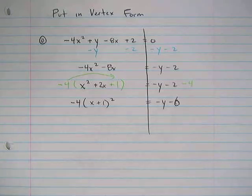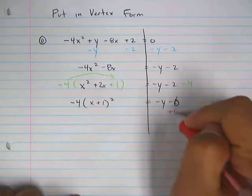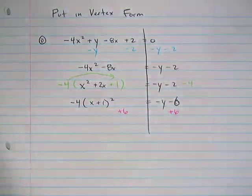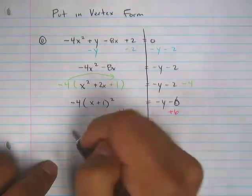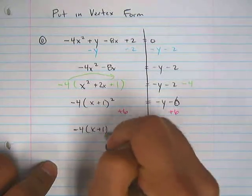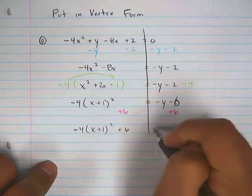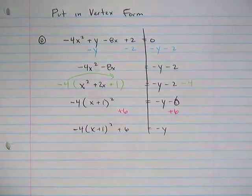Now solve for y. Get y by itself. Add 6 to both sides of the equation. -4(x + 1)² + 6 equals -y.